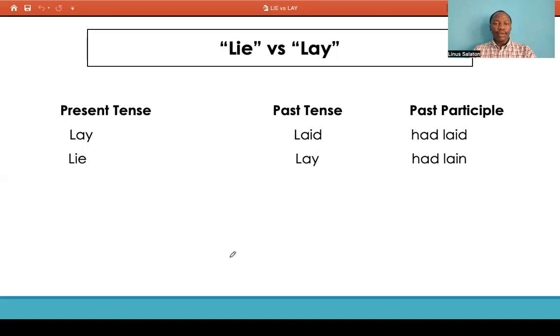So for the present tense of lay, you have lay, as we have talked about. Then past tense, you'd say he laid down the pencil on the table. The past perfect, you'd say he had laid down the pen.